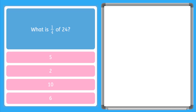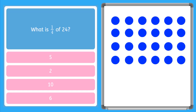Now let's try a harder one. This one asks, what is one fourth, or a quarter, of 24? Let's draw our candies to help us think about this. Here are my 24 candies — that's a lot of candy. I can look at my fraction and it says one over four.